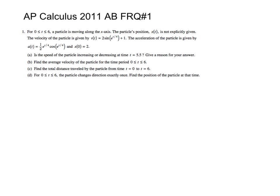In this question, they give us some information to start. From 0 to 6, a particle is moving along the x-axis. The particle's position x of t is not explicitly given. The velocity v of t is given by this function, and the acceleration is given by this other function. The piece of information that x of 0 equals 2 is going to be very important, and some people overlook that. One important thing to note is that this is a calculator-allowed question, which will definitely be important for us.